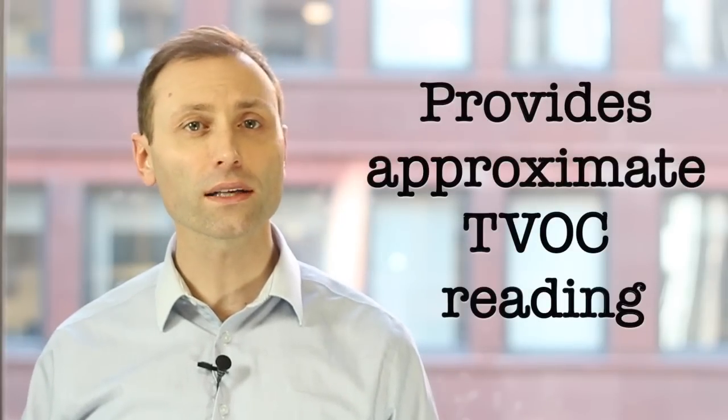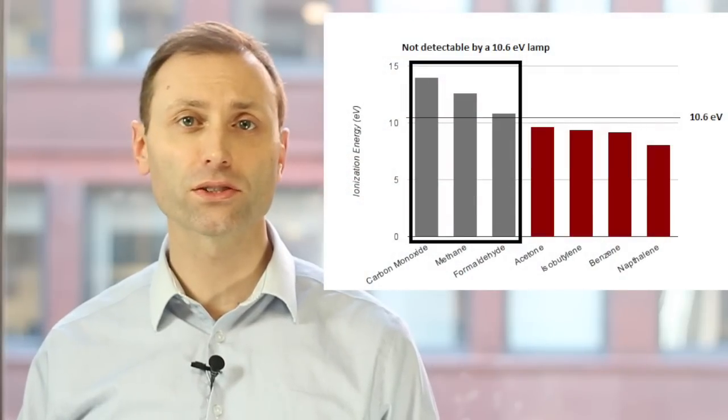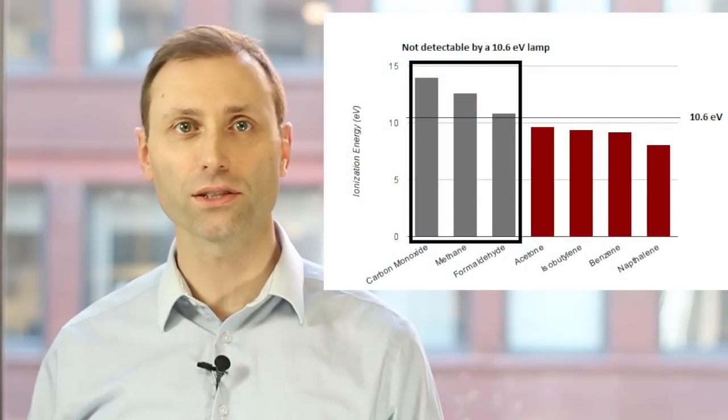Because the PID reading is an equivalent of the calibration gas, the device gives an approximate TVOC, not a true measurement. It's also important to note that PIDs cannot detect all VOCs in the air. This happens when the PID's lamp energy is less than the VOC's ionization energy.